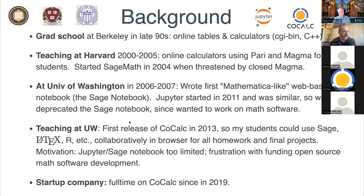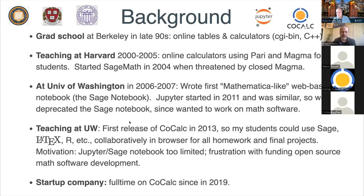I thought that was cool, but I taught a bunch of classes at UW to undergraduates — basically data science classes with a lot of pure math mixed in. I wanted students to learn statistics using R, learn the basics of LaTeX, learn group theory and calculus using Sage, do homework assignments where they could collaborate, and write final projects. It was really hard for them to install all this software on their own computers. It was kind of a nightmare.